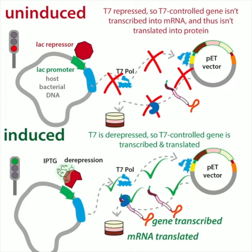You might wonder why we use different cells for expression versus cloning. There are different reasons, including how much DNA versus protein you can get. Also, the repression can be leaky — you can still get a little bit of your protein made even when the cells aren't actively supposed to be making it.